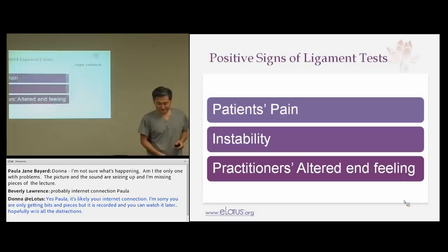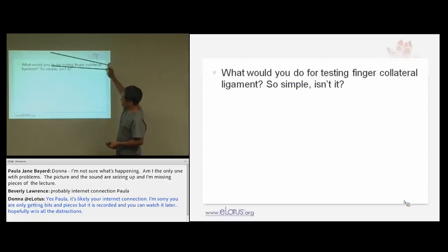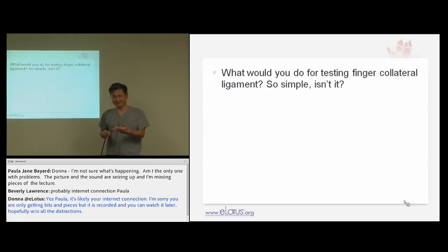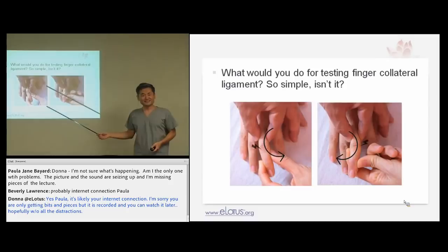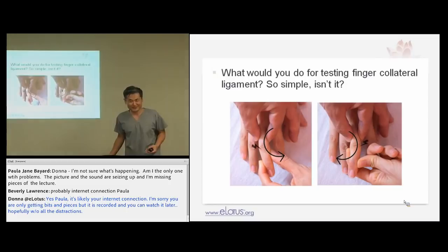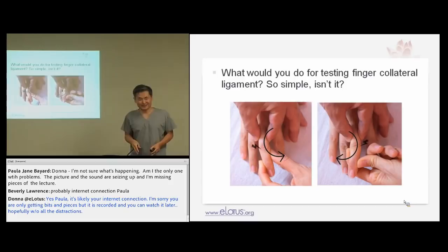Question: what would you do to test a finger collateral ligament? It's simple. The collateral ligament is wounded — you can test it by giving varus/valgus stress, just flexing to one side. That part of the ligament is stretched and there will be pain, soft mushy feeling, or if completely torn, hypermobility. You can apply this principle to all hinge joints. Orthopedic test is as simple as that.